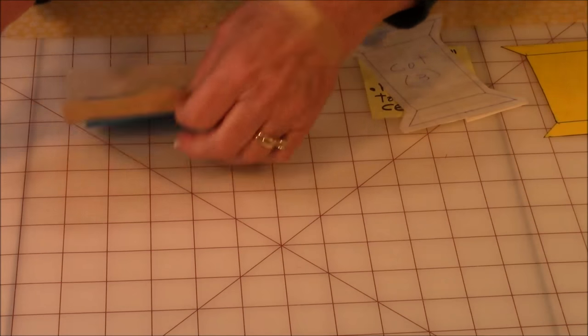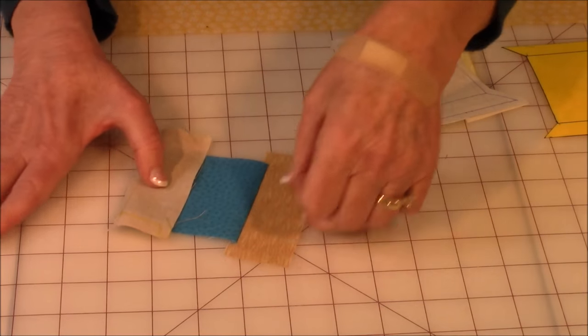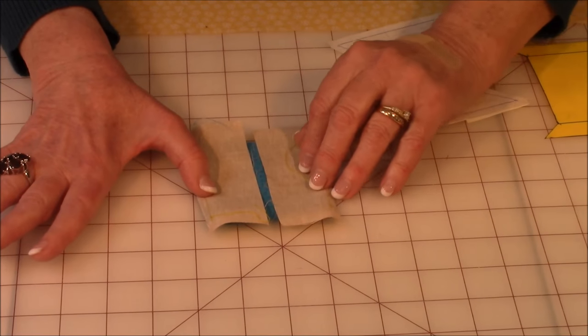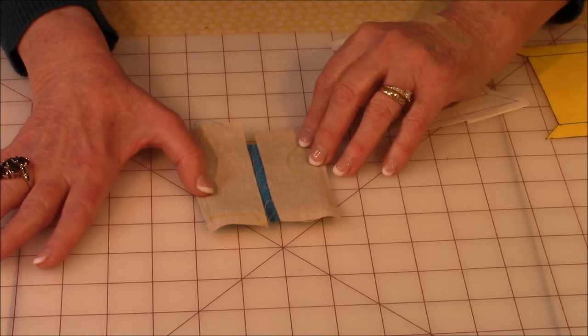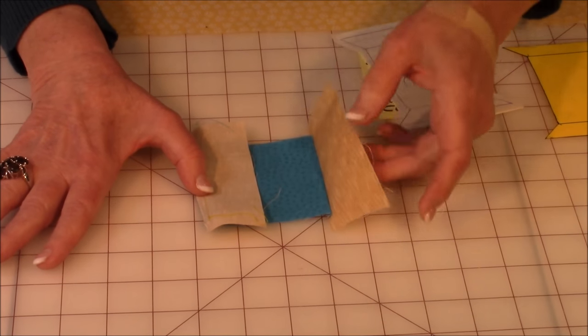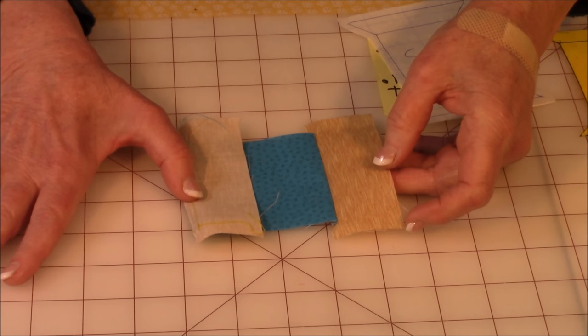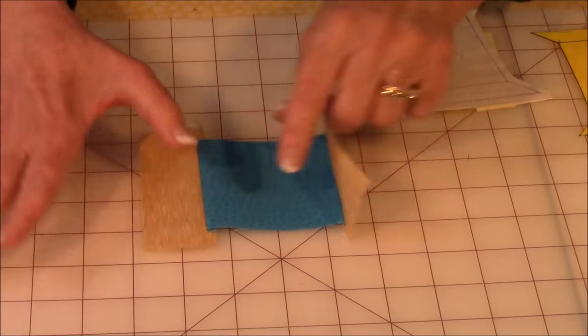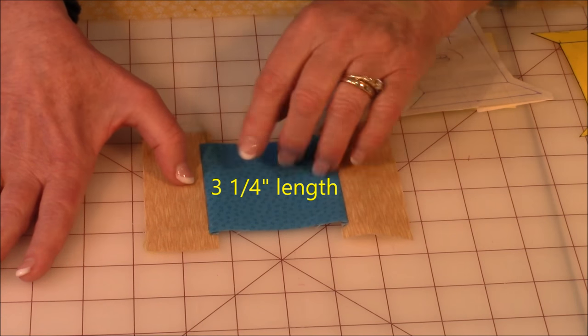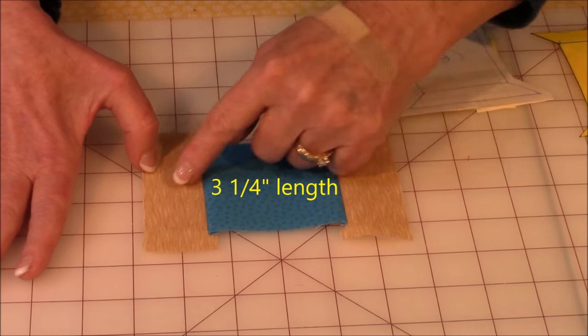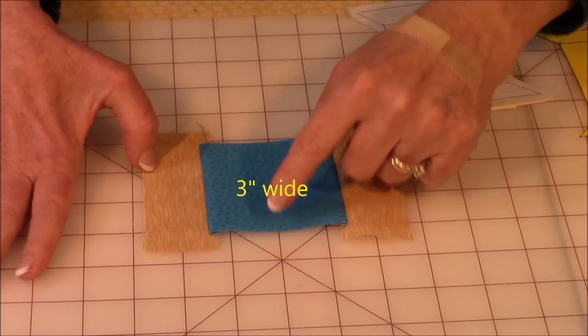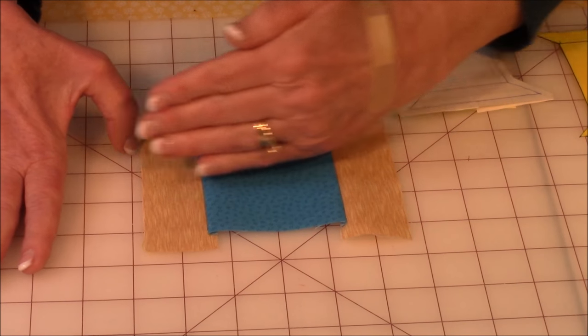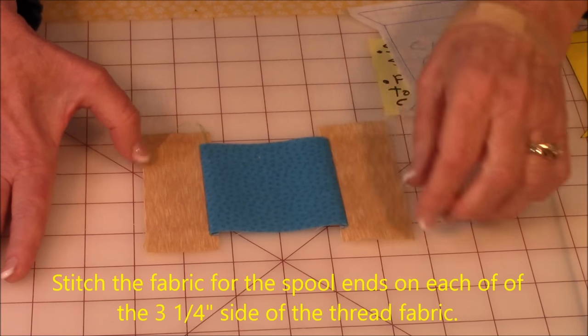Then take the fabric pieces. Now the two end pieces are the fabrics that represent the top and bottom of the spool. I used a kind of a dark beige or pale brown so that it would give the impression that it's wood. Now this fabric in the center is the thread fabric. It's three and a quarter inches this way and three inches this way. Put the two end pieces on these two ends here. The ones that's going three and a quarter inches. So put that on.